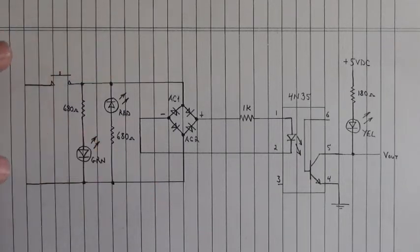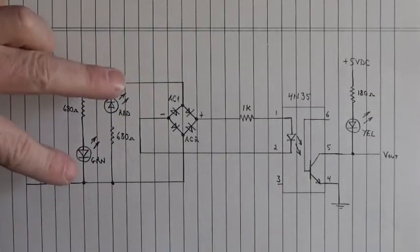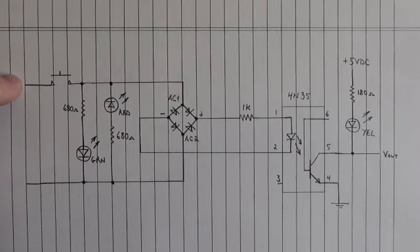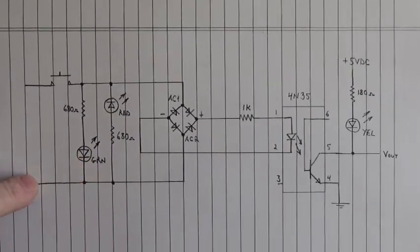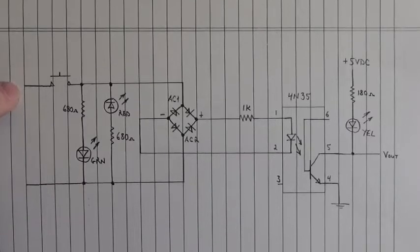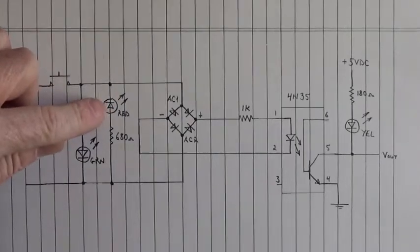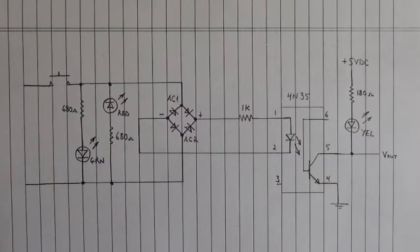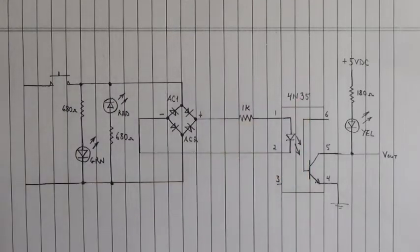Now these LEDs are just indicators of the polarity input to these two points right here. They don't need to be in this final circuit — they were there just to show us whether this was positive up here and ground down here, which would illuminate this green LED, or positive down here and ground up here, which would reverse bias the green LED and forward bias the red LED, turning the red LED on. Let's look at how the bridge rectifier corrects the polarity of the incoming DC voltage to the LED of that 4N35 optocoupler.